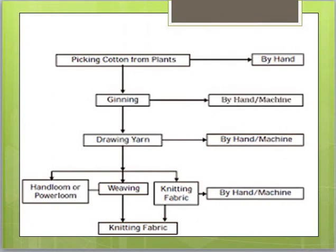This slide covers the processing of cotton: picking cotton from the plant by hand, then ginning, then drawing yarn, and then hand loom weaving or knitting. I am explaining the complete process of cotton, including yarn and weaving, knitting, and other things.